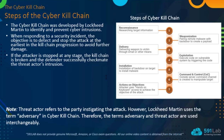The Cyber Kill Chain has seven steps. Step 1 is Reconnaissance — researching target information. Step 2 is Weaponization — creating remote malware with a backdoor to create a payload. Step 3 is Delivery — transmitting the weapon to the target. Step 4 is Exploitation — the attacker executes code on vulnerable systems by triggering the code.